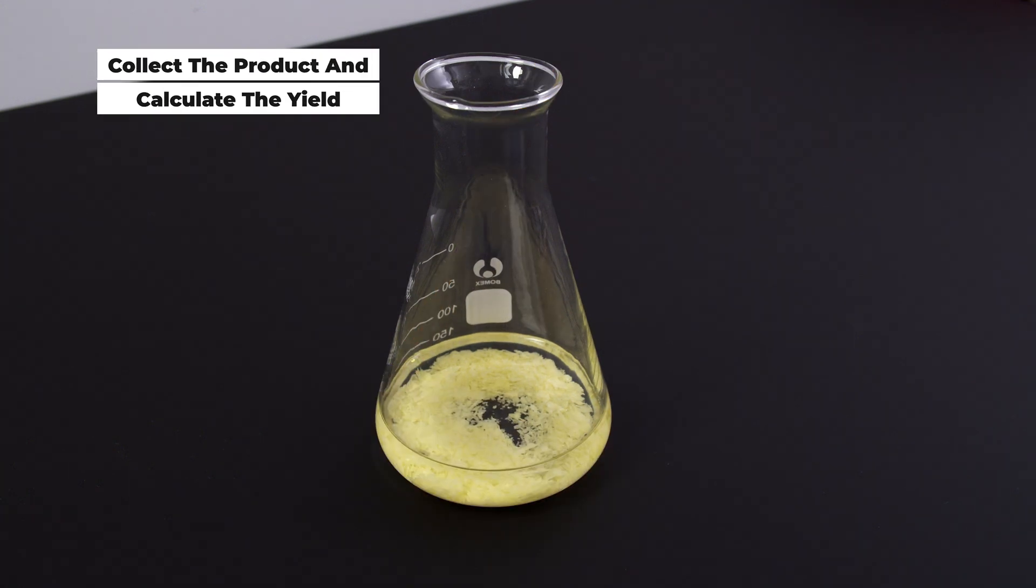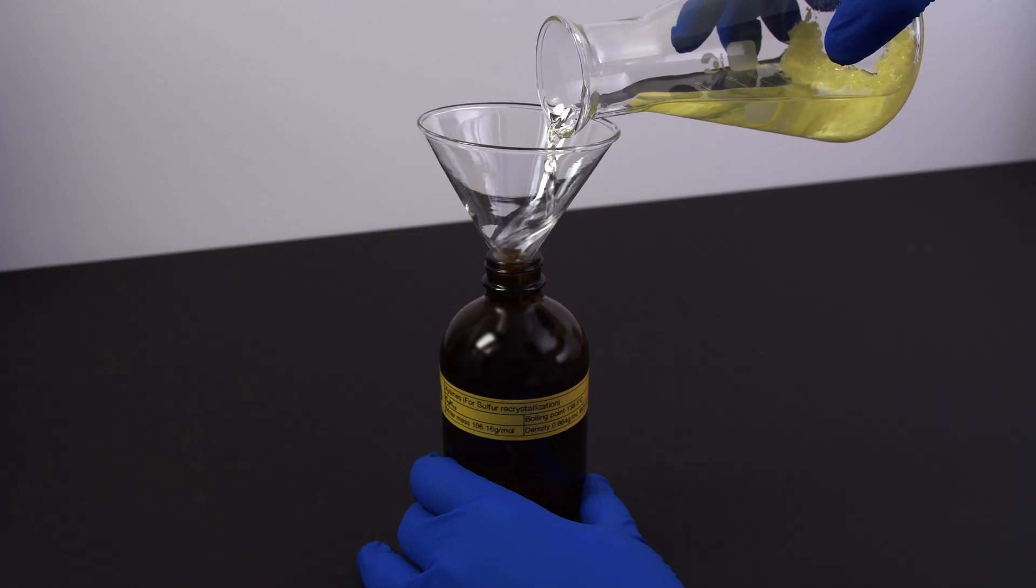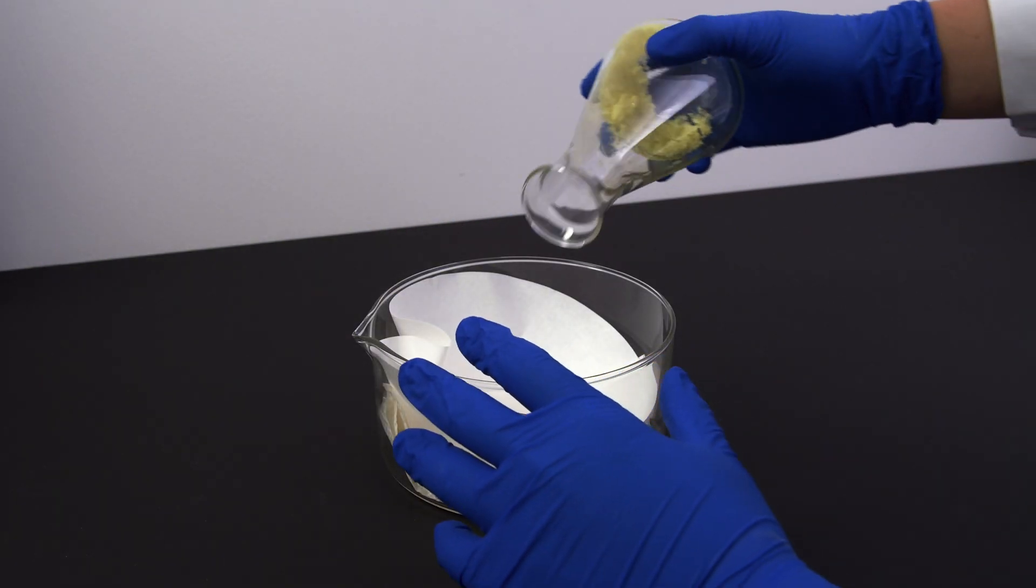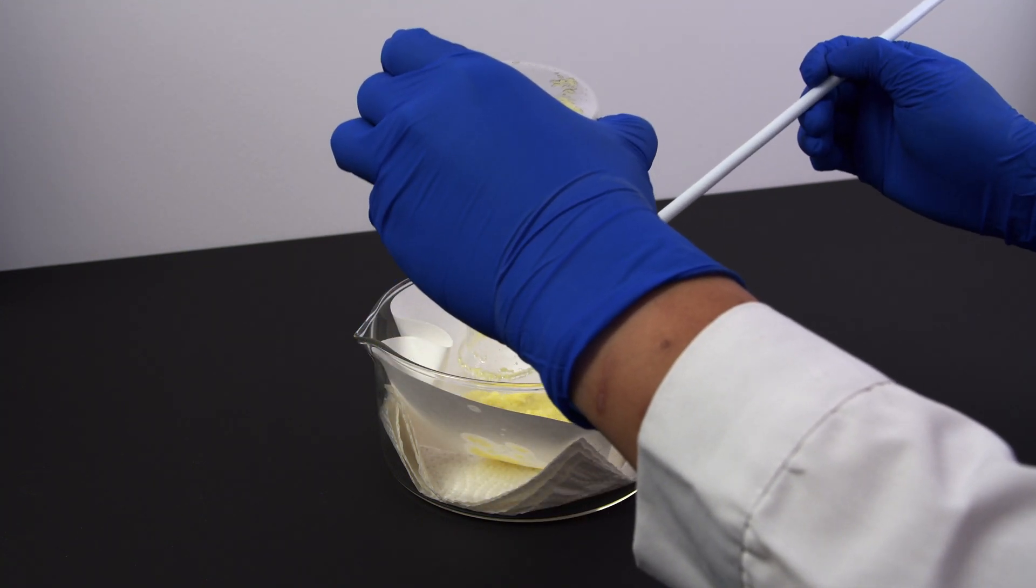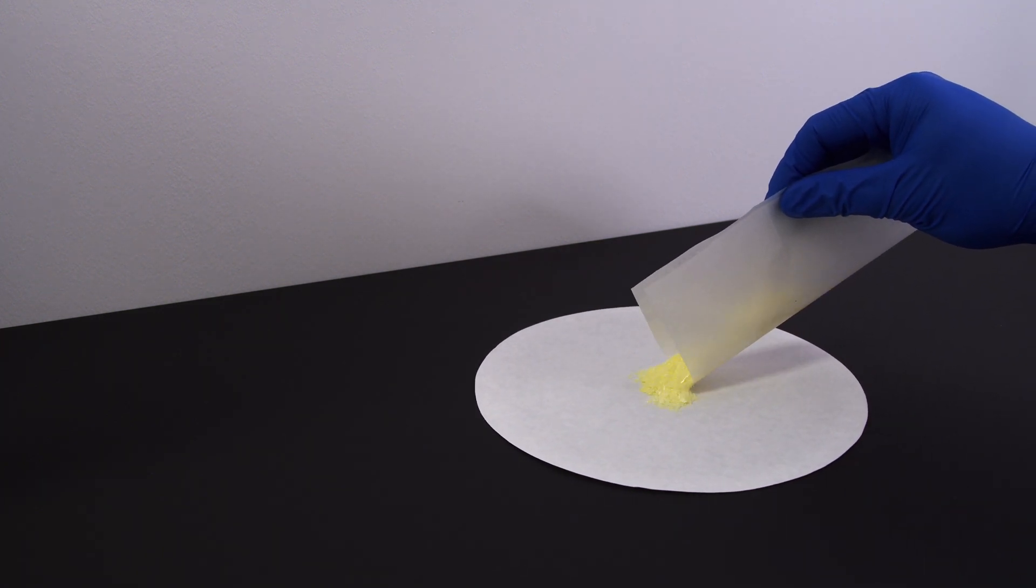Once the solution reaches room temperature, carefully decant the xylene to a bottle and store it for another recrystallization of sulfur. Transfer the remaining sulfur crystals to filter paper, and allow xylene to evaporate. The dried sulfur will be in free flowing form. Weigh the final mass and calculate the yield.